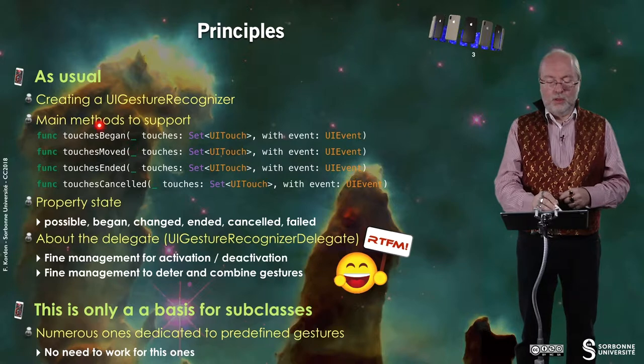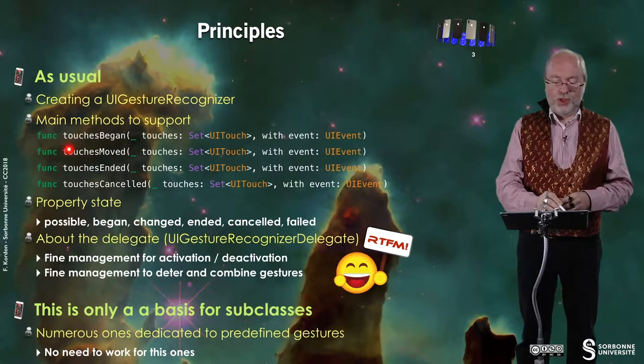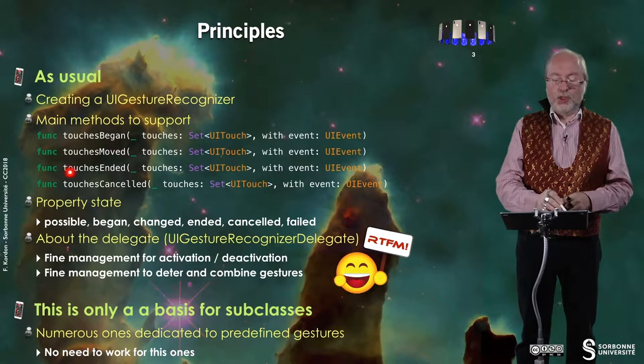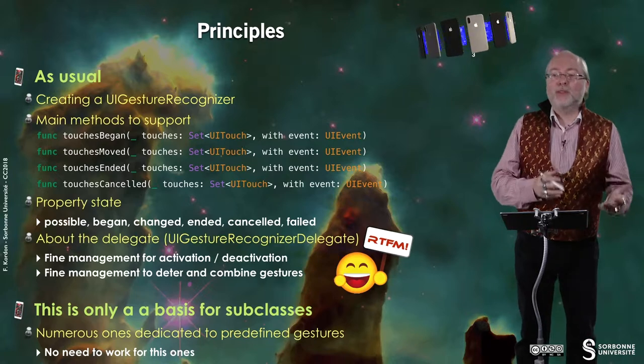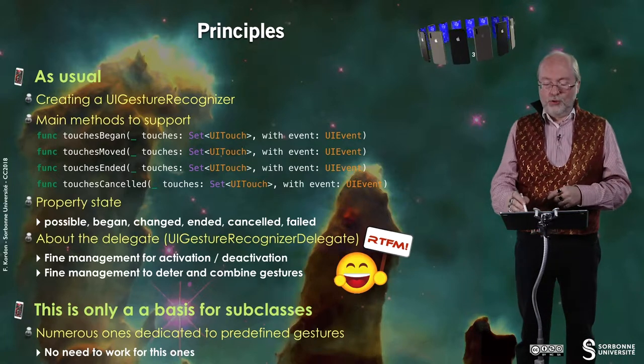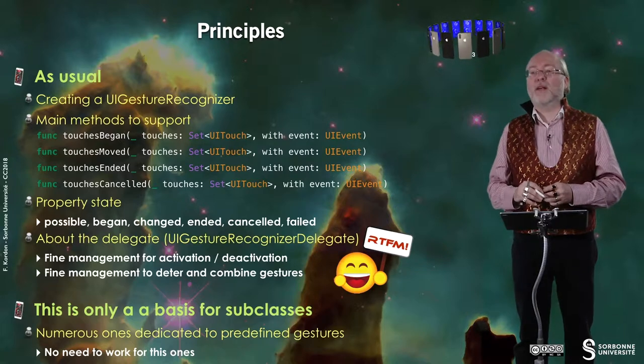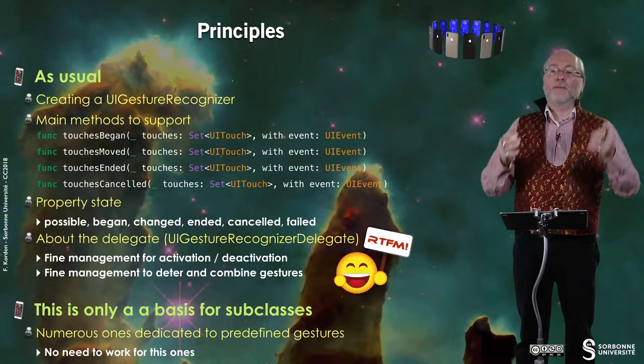The principles are very close to those of a touch. When you create a UIGestureRecognizer, you have several methods to support: when touches began, when touches moved, when touches end, when touches are cancelled. There is a property state associated to events that can indicate: possible, started, changed, ended, cancelled, or failed.